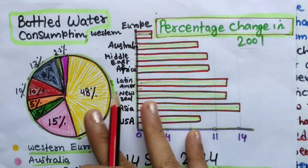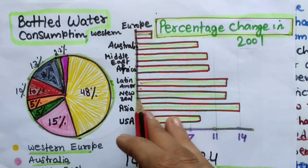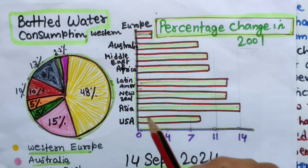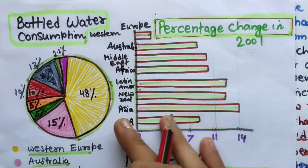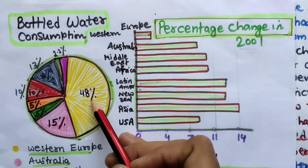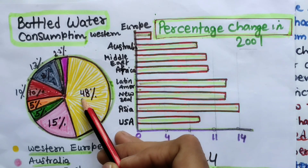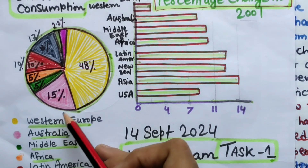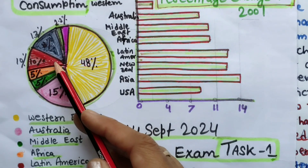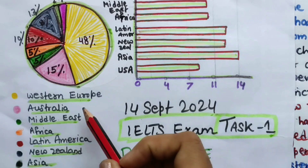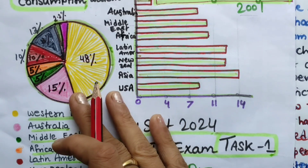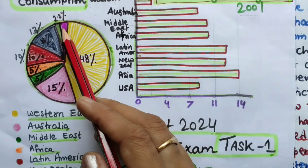I was reading and analyzing the writing title. If you do not spend the first five minutes analyzing and reading the task 1 graphs and diagrams, it is not possible to get nine bands in your IELTS writing task 1. I have come to know there are two graphs with percentages. Let's analyze the pie chart. The biggest pie segment is 48% — that is Western Europe. Then Australia is 15%, Middle East is 5%, Africa is 5%, Latin America 10%, New Zealand 13%, and Asia and USA are 2.2% each.